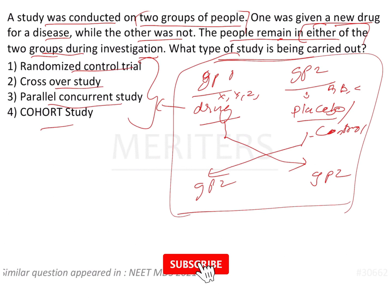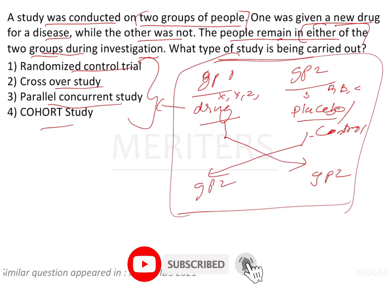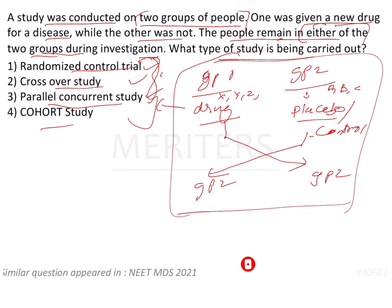If you look at the first three options — RCT, crossover study, and parallel concurrent study — these three are clinical trials. Cohort study is the odd one out, as it is a non-experimental study placed among experimental options.